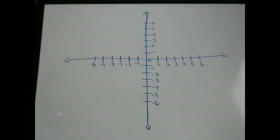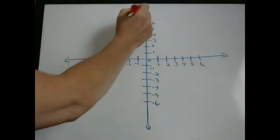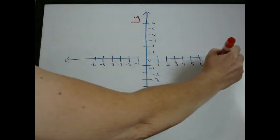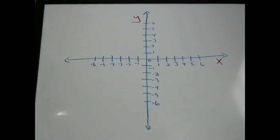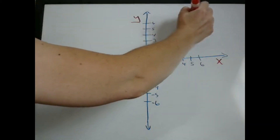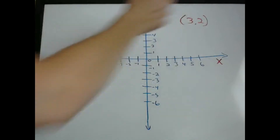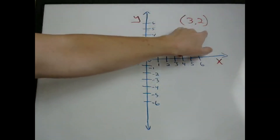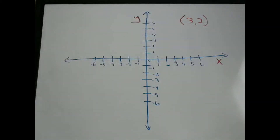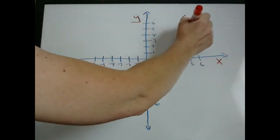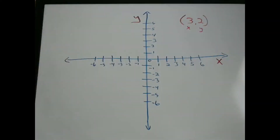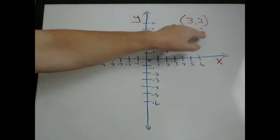When you have a coordinate plane, the vertical line is always the y-axis. The horizontal line is always the x-axis. When you're given a point, for example (3, 2), points are always going to be written in parentheses with two numbers separated by a comma. The first number is always your x-coordinate. The second number is always the y-coordinate.